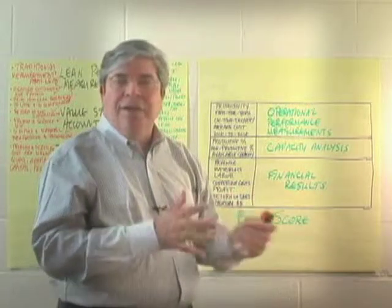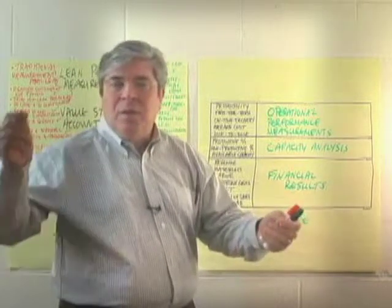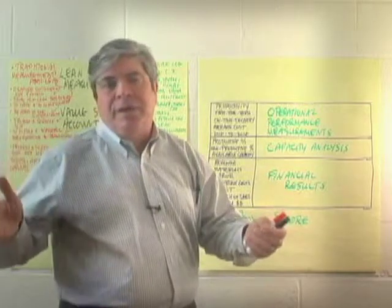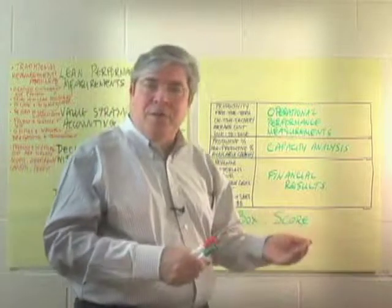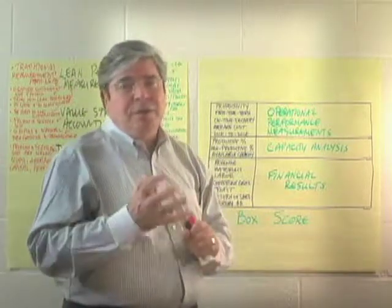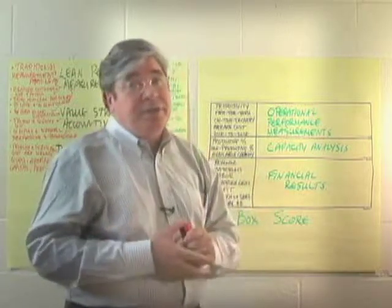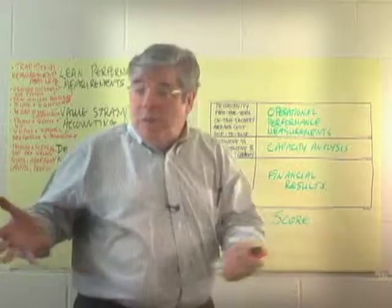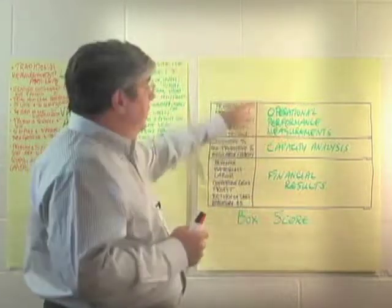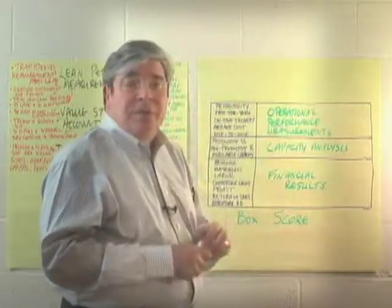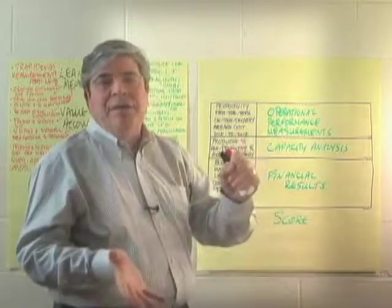For make/buy decisions and understanding the financial impact of lean: we have the current value stream map and the future value stream map — maybe a year from now — and we do a box score to show the impact of all the changes planned over the next 12 months. What's going to happen operationally, from a capacity standpoint, and financially? This is very important because many companies going into lean ask, what are our savings? But much of it doesn't hit the bottom line, as the controller or CFO will point out. For capital purchases we might have a 3P event with six or seven alternative approaches. All of these issues are dealt with not by asking what's the product cost, but by asking what's the impact on the value stream as a whole.